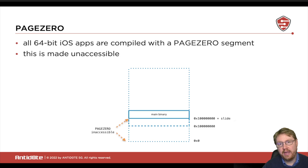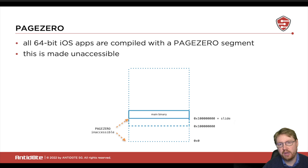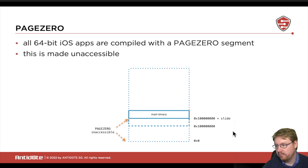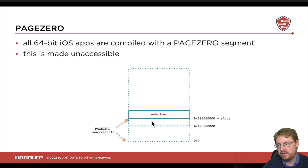Everything before that base is what is called the page zero in macOS and iOS. By default, every app and every program you compile always has a page zero segment in their Mach header. This page zero area is inaccessible — by default it covers the first 4 GB. And because of ASLR, the area between page zero and the slid binary is also made inaccessible.